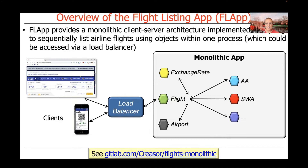You can find the source code for the monolithic version at the link at the bottom of the slide. This is typically how things were done historically. For scalability, you'd use a load balancer on the front end to have clients send requests to different instances of monolithic apps, each running in its own process. That's the old-school way of doing things.